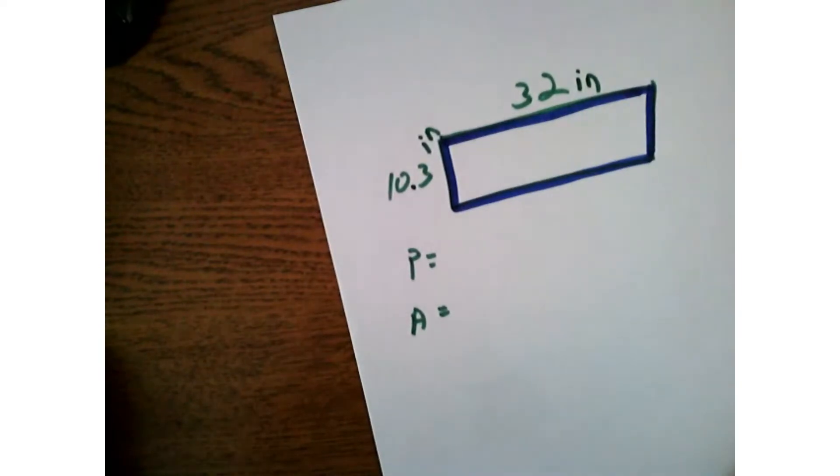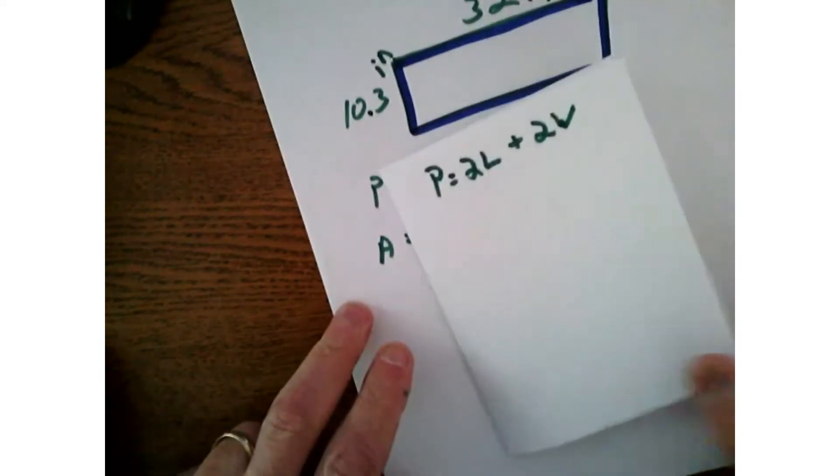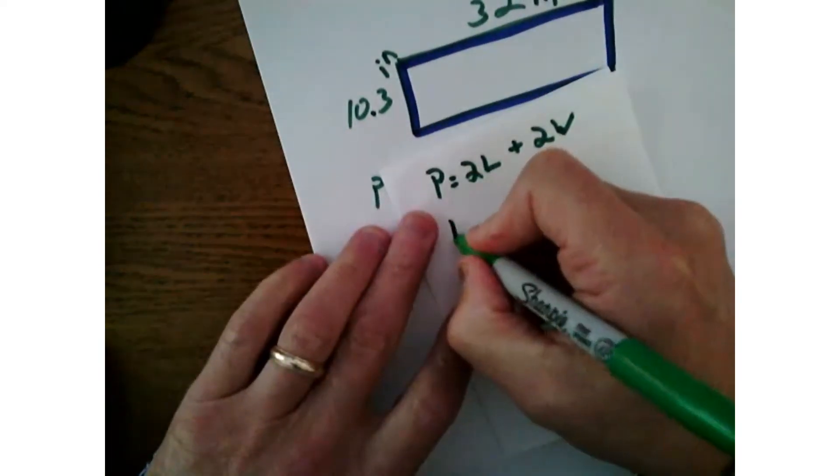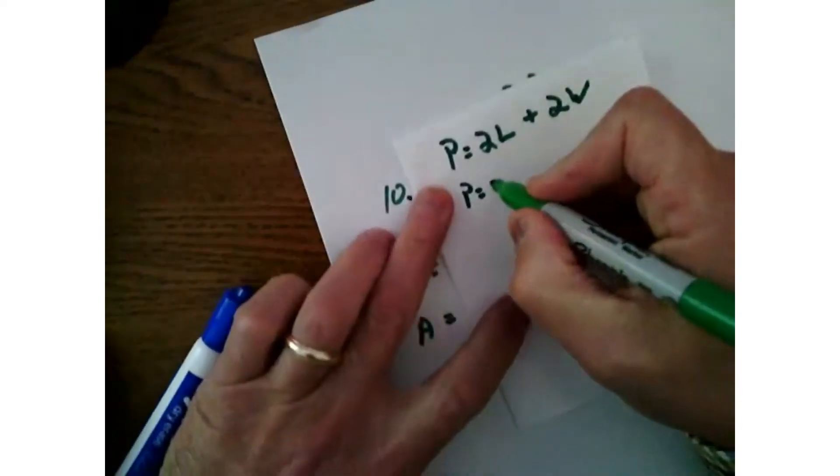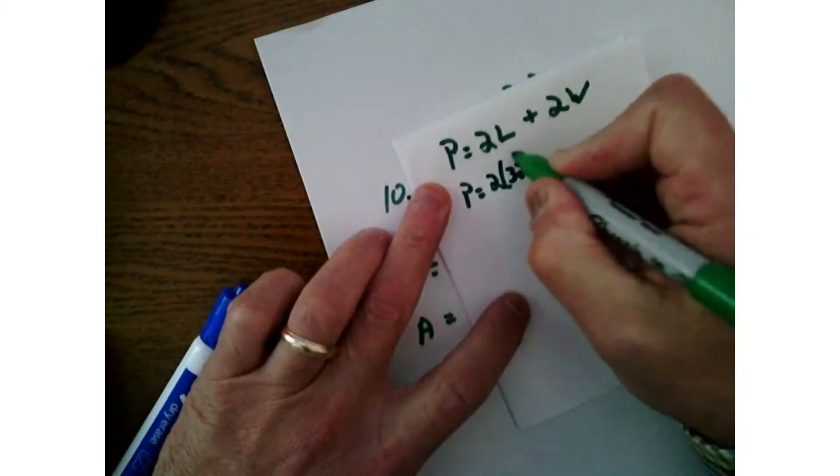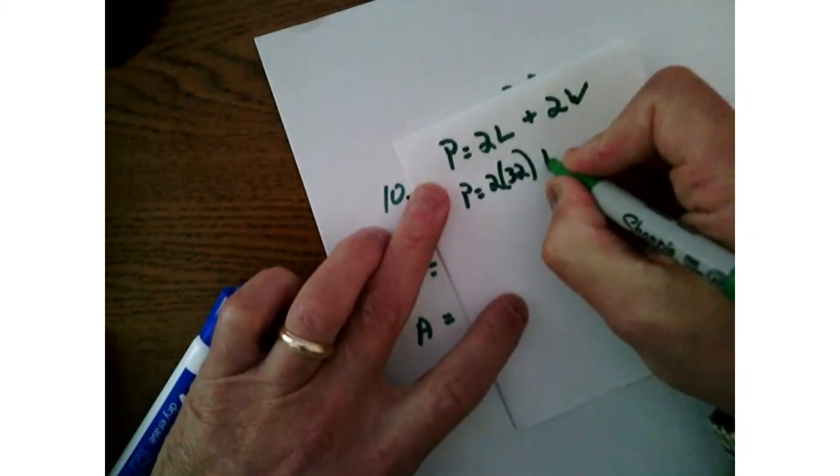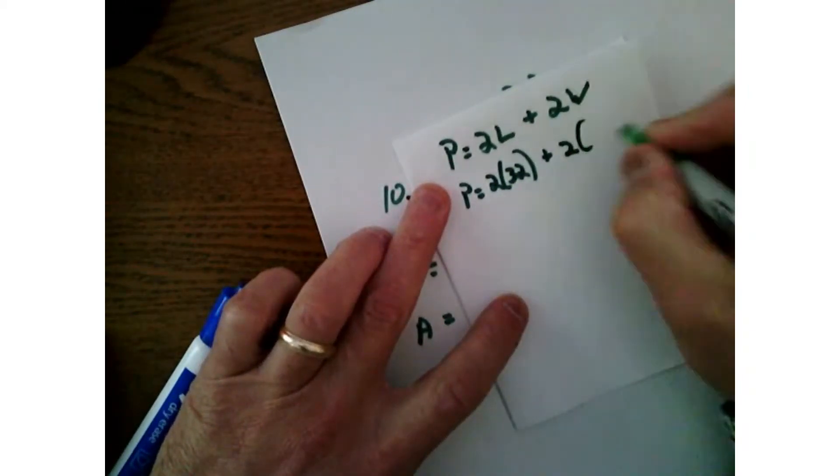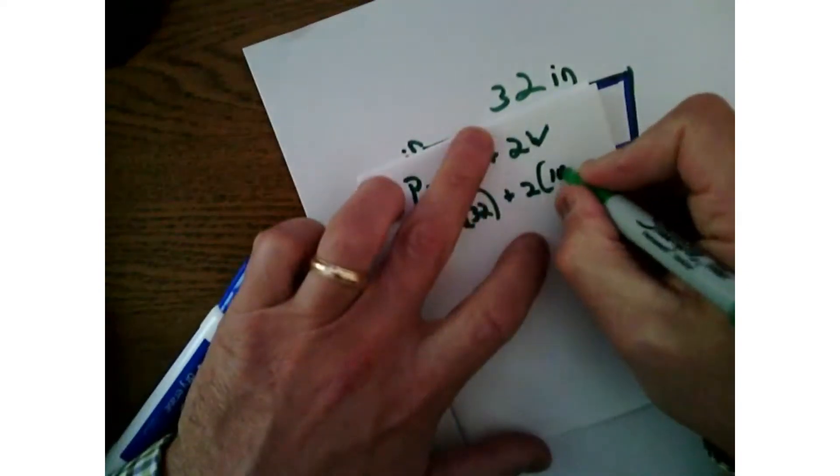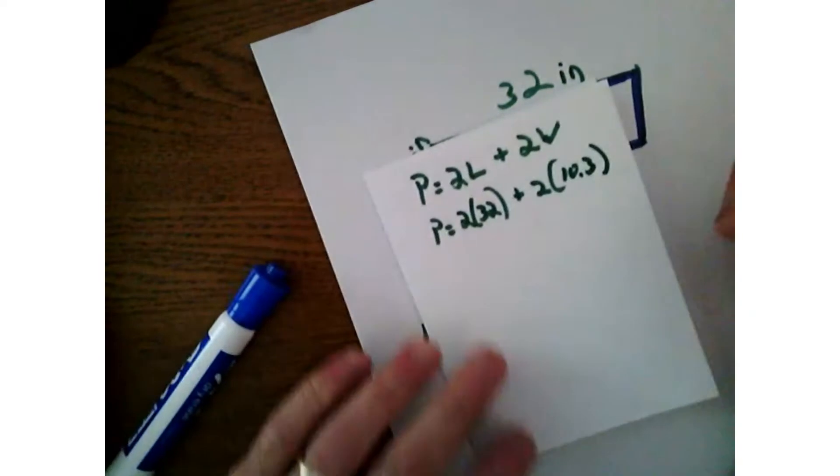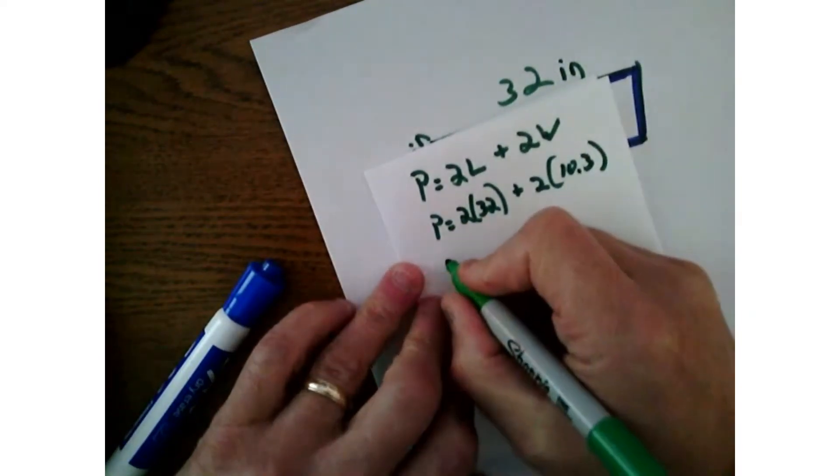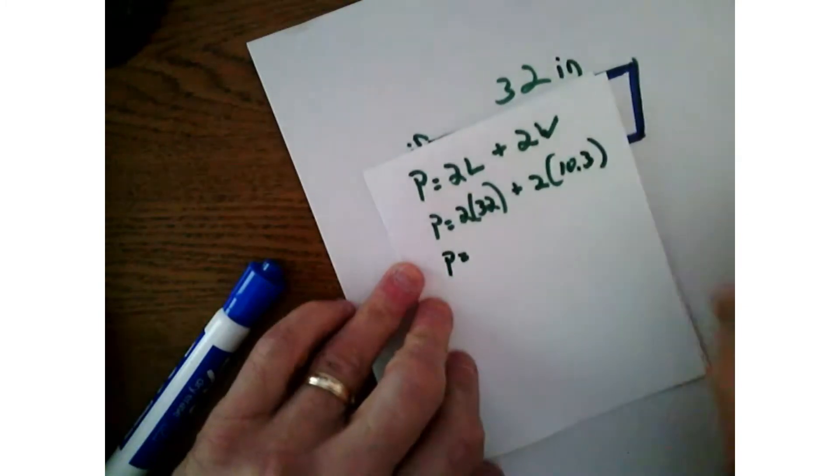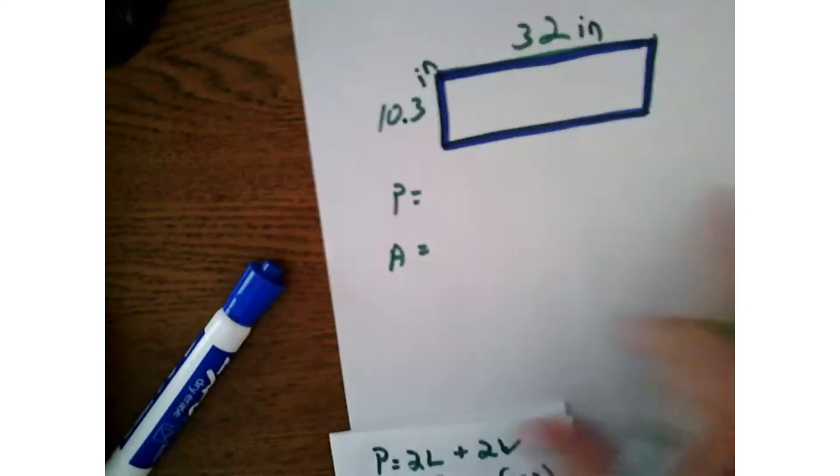So we'll do some substitutions. On this piece of paper, I want to see P equals, let's see, the length is 32, so it's going to be two times 32. You'd make it PEMDAS style, just put it in parentheses there, plus two times 10.3. I guess you could add them too. You could do 32 plus 32 and 10.3 plus 10.3, however you work that mathematically, whichever is easiest for you.